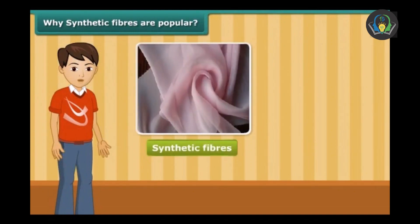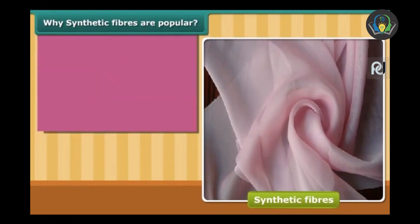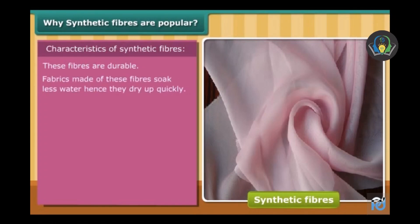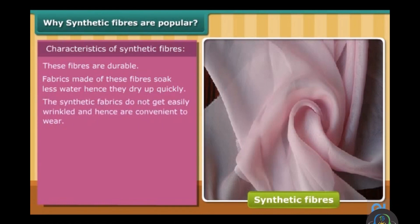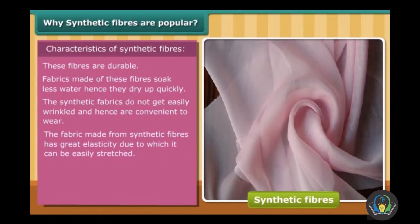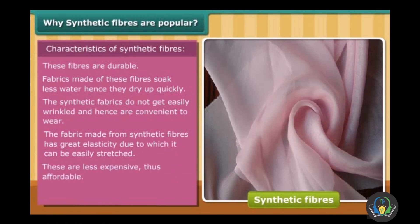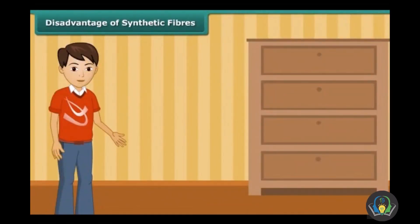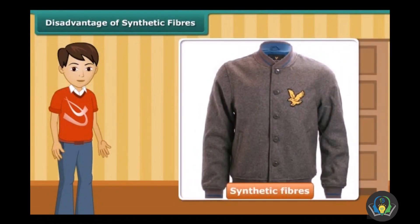By now you know what makes synthetic fibers more popular than natural fibers. Let us recall the characteristics of synthetic fibers. Because of their high strength, they can easily bear heavy loads without breaking, so these fibers are durable. Fabrics made of these fibers soak less water, hence they dry up very quickly. They do not get easily wrinkled and hence are convenient to wear. The fabric has great elasticity, so it can be easily stretched. These are less expensive, thus affordable. Fabrics made of synthetic fibers are readily available and easy to maintain.